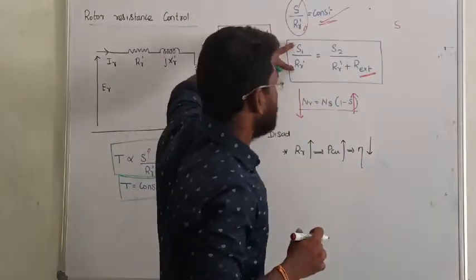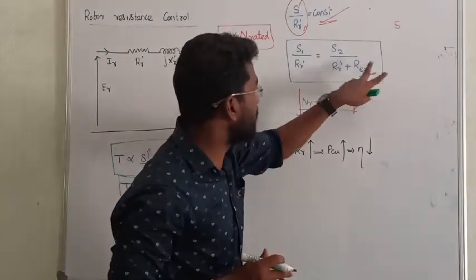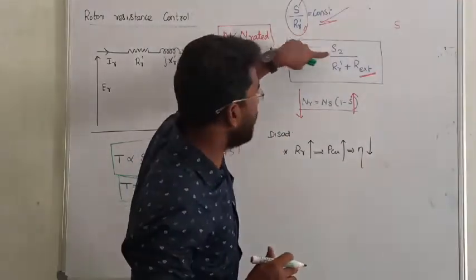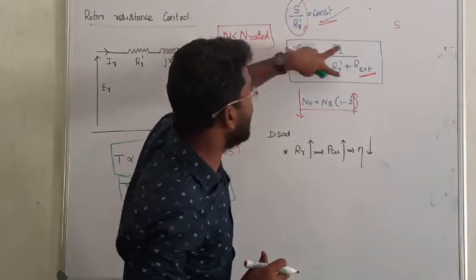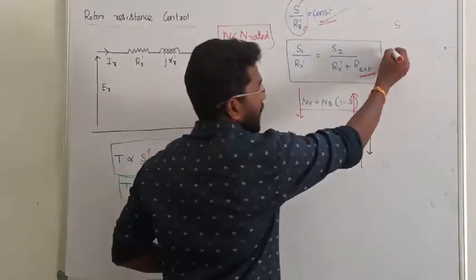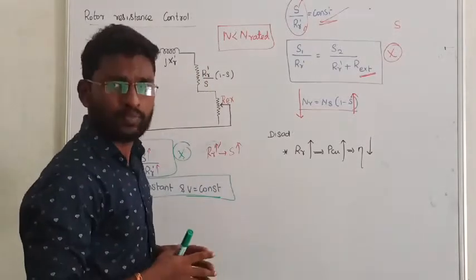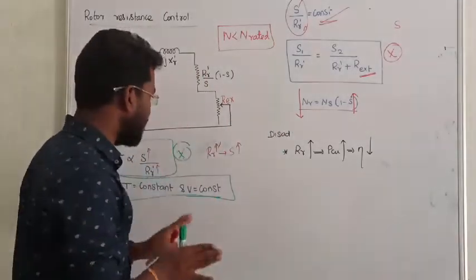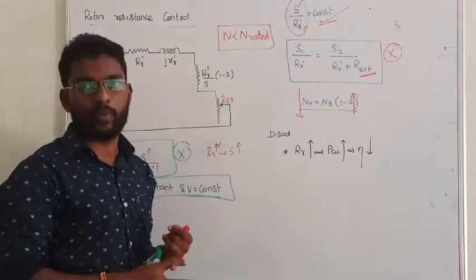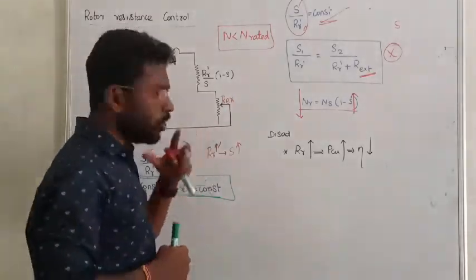We all know S by R ratio is constant. In case 1 versus case 2, when the resistance or external resistance is increased, the ratio must be constant but the values are individually different. Previous case we are trying to maintain the rotor resistance as constant and we varied the voltage. In this case rotor resistance is varied and voltage is constant. There is no big difference.